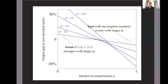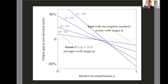This figure shows that if we look at the degree of market incompleteness — where μ in our model represents incompleteness, so larger μ means more incomplete markets — as markets become more incomplete, the larger the drop in output in response to an epidemic shock.